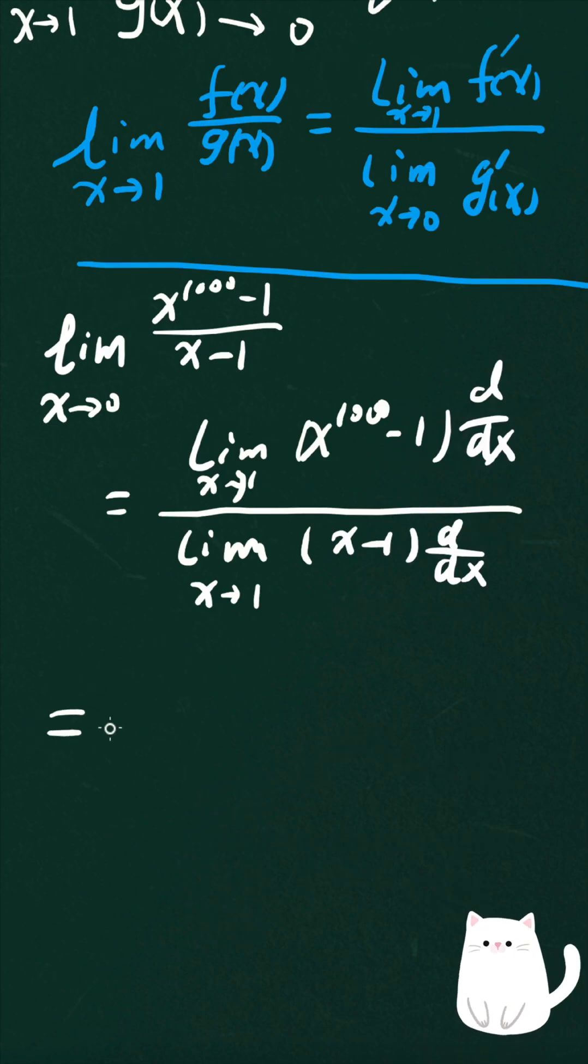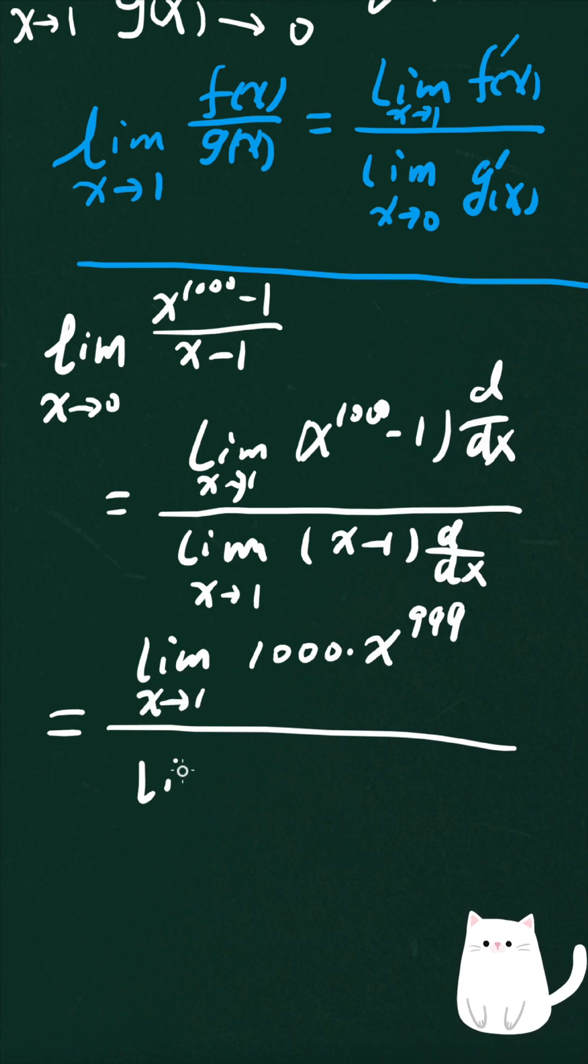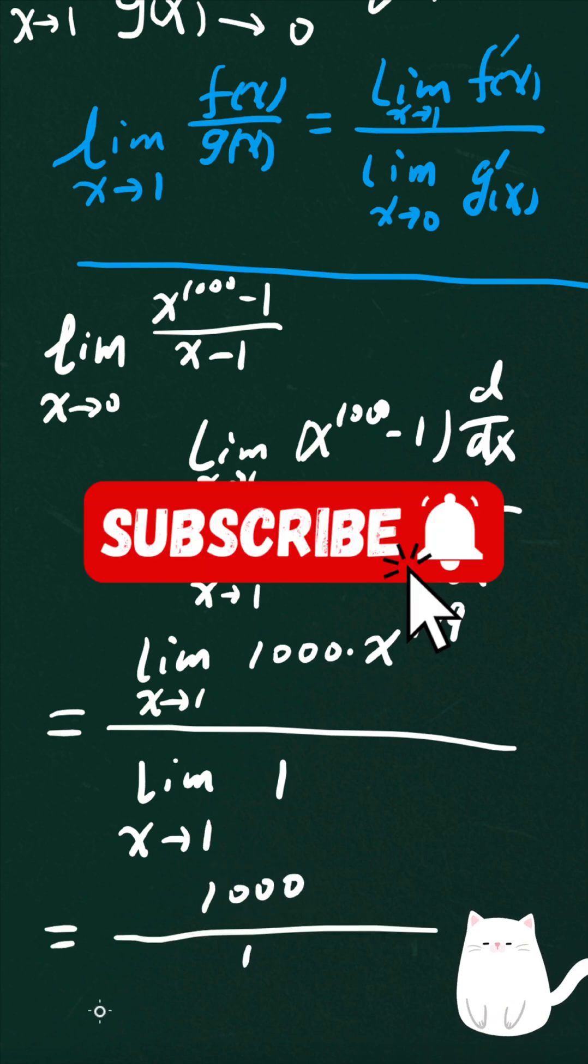Then this whole thing can be simplified as the limit of the derivative. We can calculate the derivative out, which is 1000 times x raised to the power of 999 as x approaches 1. The denominator is the limit of 1 as x approaches 1. We plug 1 in, so this thing is equal to 1000 divided by 1, which is 1000.